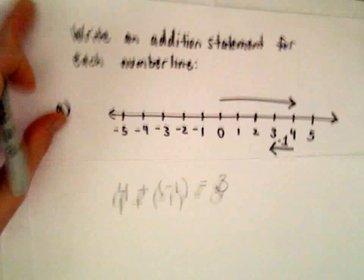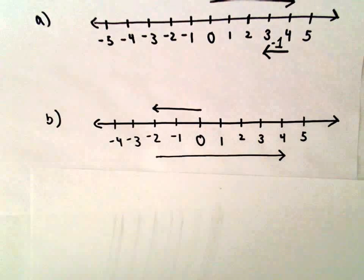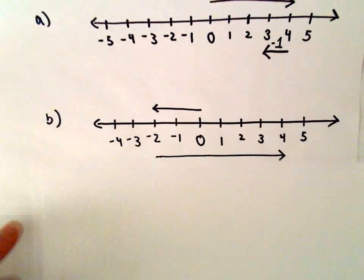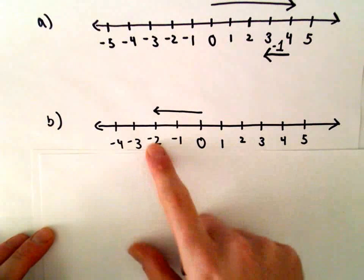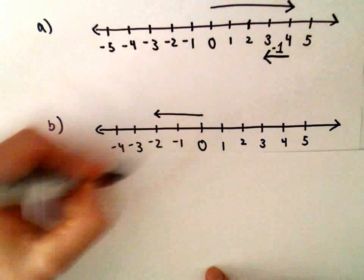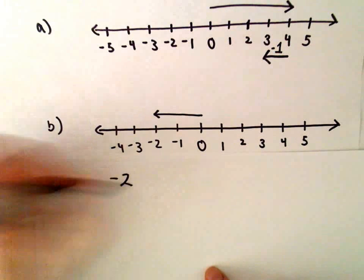We'll do the same thing for part B. On the top part, it looks like we're going two units to the left. Two units to the left gives us negative two.